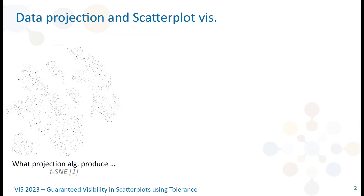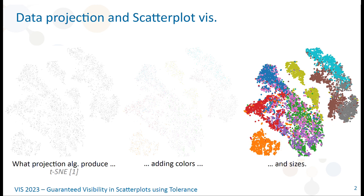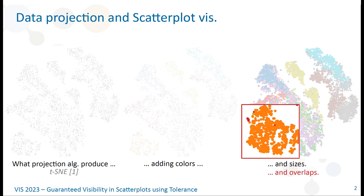Most of the large-scale scatter plots we manipulate are produced by algorithms, such as TSNE, that project the points in two dimensions. We call these points nodes, and since the visualization of their projection as-is is not satisfactory, we often represent them with a color and a size. However, adding this size modifies the relative distances between the nodes in a way that was not anticipated by the layout algorithm and can induce overlaps.